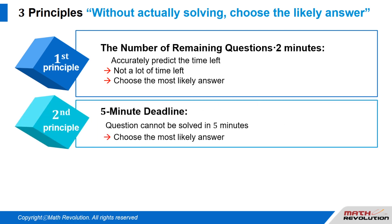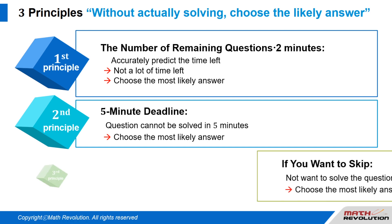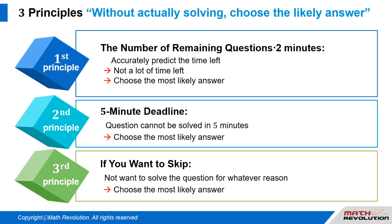Second principle: five-minute deadline. If you are unable to answer the question within the five-minute deadline, it might be a good idea to simply choose the most likely answer. This applies even when there is enough time left until the end of the exam. Third principle: just want to skip. If you don't want to solve the question for whatever reason, consider the option of choosing the most likely answer. These three principles are extremely useful during the actual exam, as they will help you finish on time and give you the greatest chance of doing well.